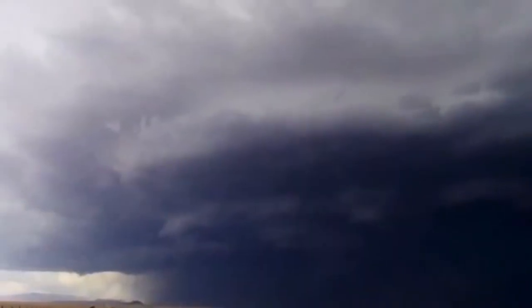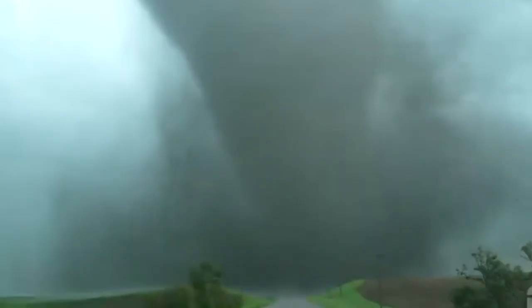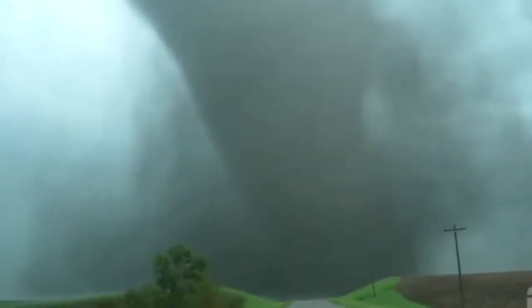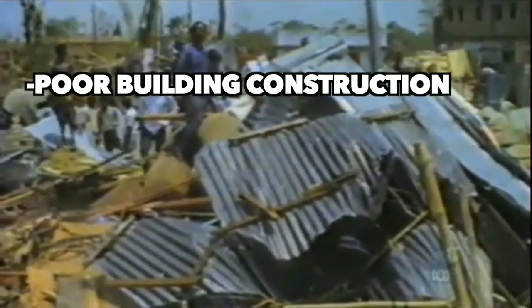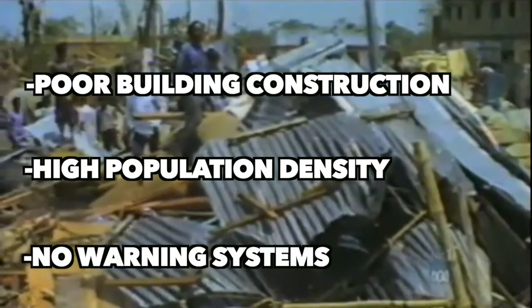On April 26th at 6:30 PM, a tornado touched down near Dalitpur, located in the Manatganj district. Even though the tornado only traveled a path of 10 miles and was 1 mile wide, it did extensive damage. Within a 2.5 square mile area, nearly all buildings were destroyed. The main reason the death toll was so high was because of poor building construction, high population density, and no warning systems.